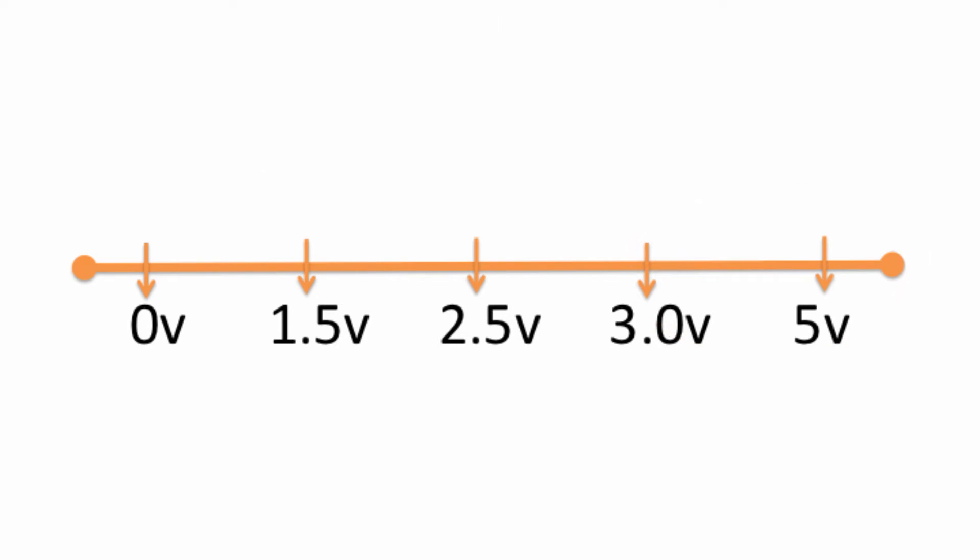Now you might be wondering what about that huge range in between 1.5 and less and 3.0 and more. There's a volt and a half of like who knows what. That's essentially what it is. You can't be guaranteed if you have a digital pin set as an input—if you get a voltage between 1.5 and 3 volts, you don't know whether or not digital read will return a low or high.